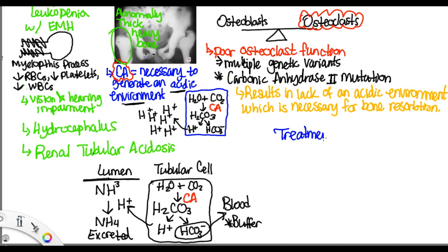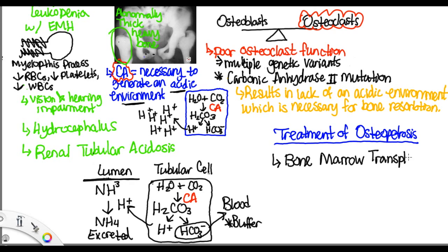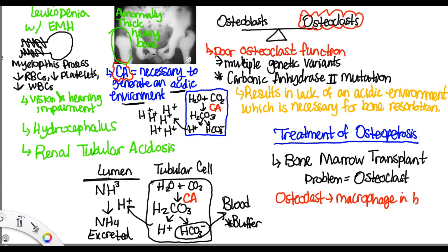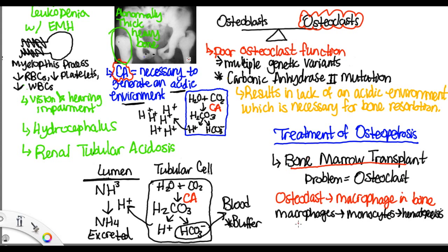The treatment of osteopetrosis is a bone marrow transplant. The problem is that osteoclasts are not functioning properly. An osteoclast is a macrophage in bone, and macrophages are derived from monocytes, which are derived from hematopoiesis. Hence, a bone marrow transplant gives the individual the ability to make normal monocytes, generating normal osteoclasts and taking care of the problem.